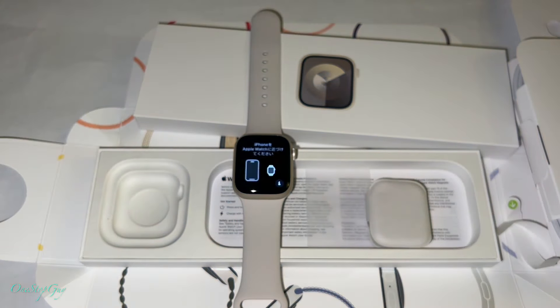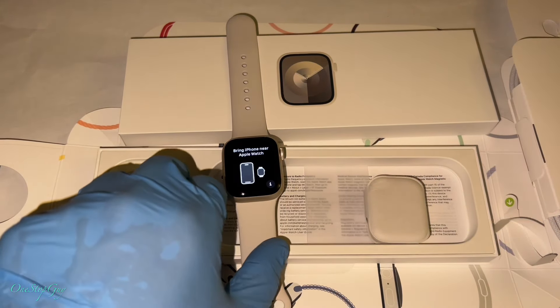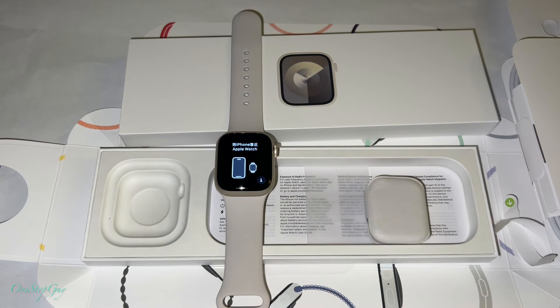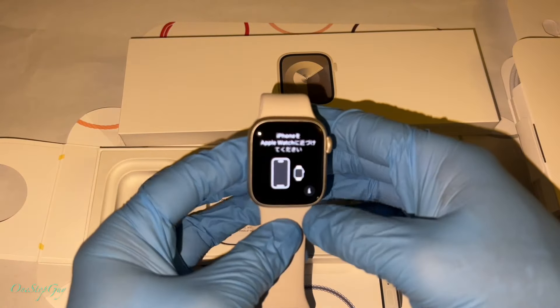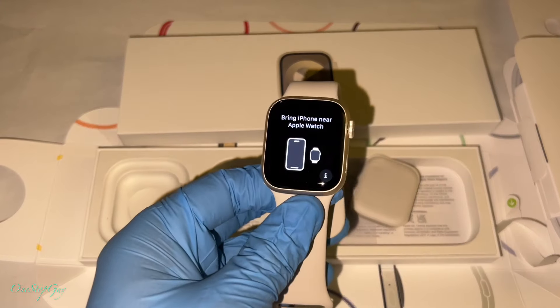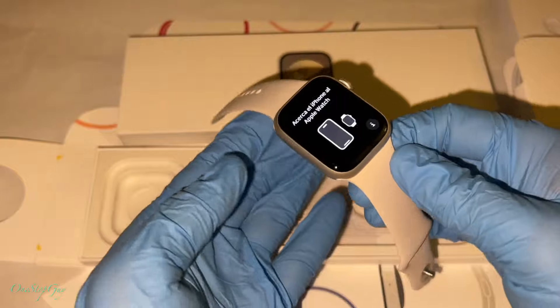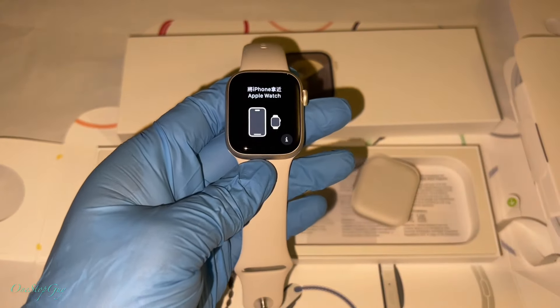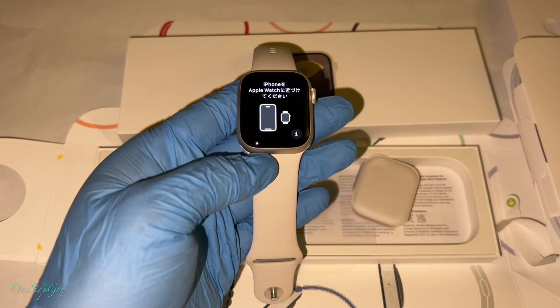Alright, that's it guys. Just wanted to do a quick unboxing of my brand new Apple Watch Series 9, starlight, white color, looking really beautiful. If you guys have any questions or comments, leave them down below. And if you guys haven't subscribed to my channel yet, make sure to hit that subscribe button and tap on the notification bell so whenever I upload any new videos you'll be the first to be notified. Alright guys, thanks a lot for watching and I'll see you guys next time. Take care, bye-bye.